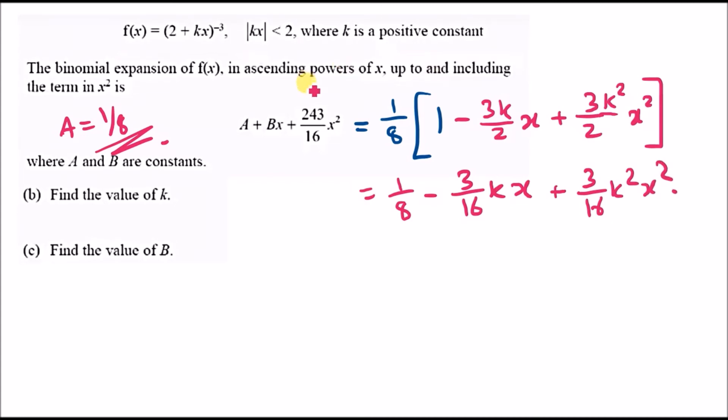The key idea is to match coefficients. B must equal -3/16 k. We can also say that the third term, 243/16, must equal the x^2 coefficient, 3/16 k^2. So 243/16 equals 3/16 k^2.